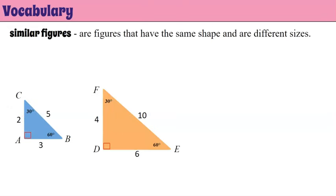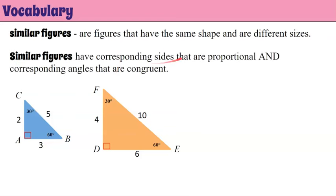Let's review some vocabulary. Here I have similar figures — these are figures that have the same shape; they're both triangles, but they are different sizes. We can see one triangle with sides 3, 2, 4, and the other with sides 6, 5, and 10. What makes them similar is that they have corresponding sides that are proportional and corresponding angles that are congruent. Unlike congruent figures, similar figures do not have corresponding sides that are congruent — their corresponding sides are proportional.